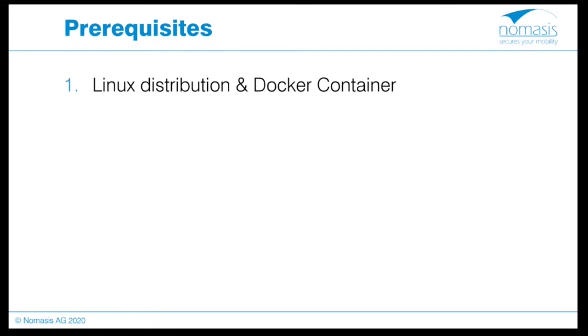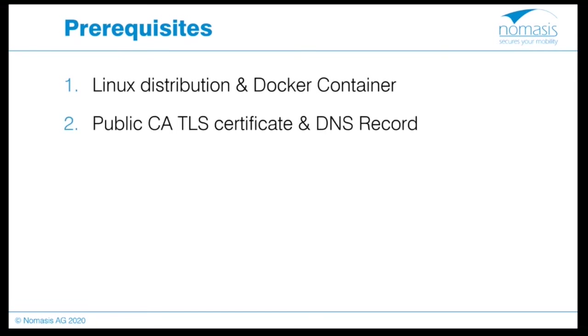Let's come to the prerequisites for a successful installation of Microsoft Tunnel Gateway. It should be ensured that they are met before starting. First, we need a server with a supported Linux distribution for hosting the gateway — for example, Ubuntu 20.04. Additionally, Docker must be installed on the server to support containers; the required version is described in the installation documentation. Second, use a TLS certificate from a trusted public certification authority containing the public FQDN of the gateway server — for example, mst.nomasis.ch. Also propagate an A record of the FQDN on your public DNS server.